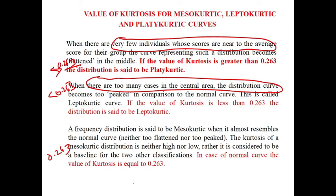When there are very few individuals whose scores are near to the average score for their group, this is a platycurtic curve. When there are too many cases in the central area, the distribution curve becomes more peaked.